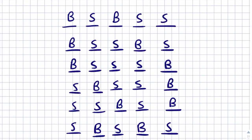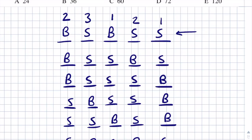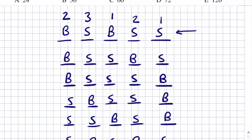For the first scenario, we concentrate on the brothers — there are 2 choices for who goes first. For the first sister there are 3 choices. The second brother has only 1 place. The second sister has 2 choices, and the last sister has 1. So total permutations = 2 × 3 × 1 × 2 × 1 = 12.